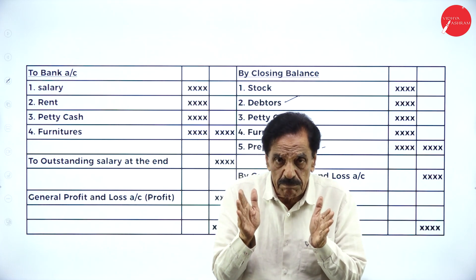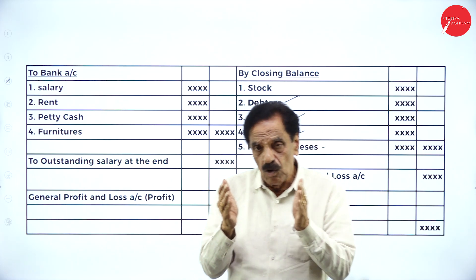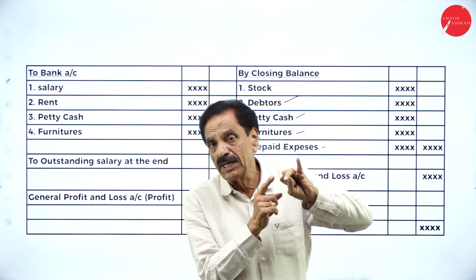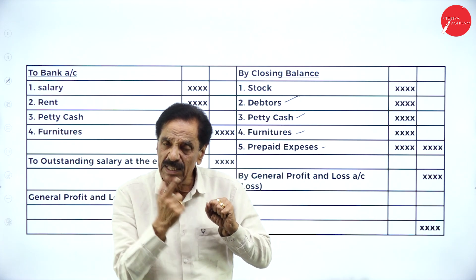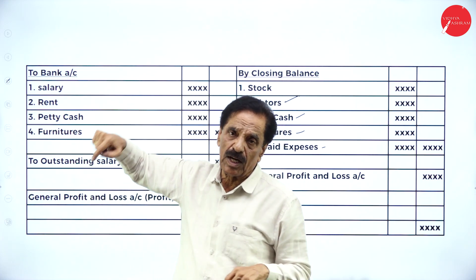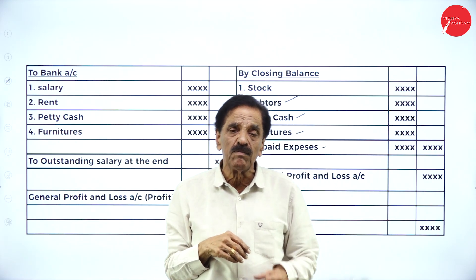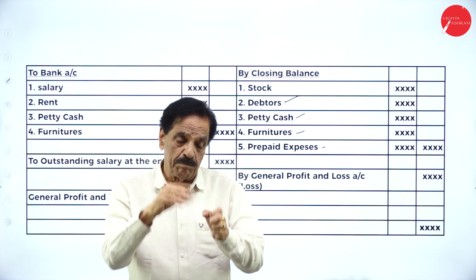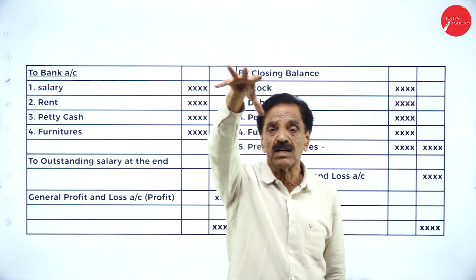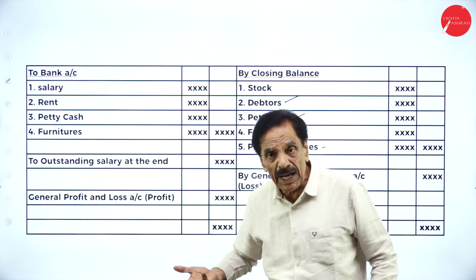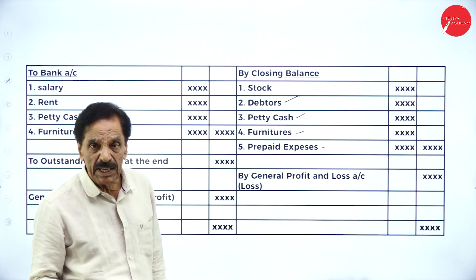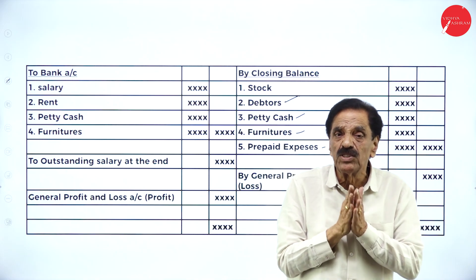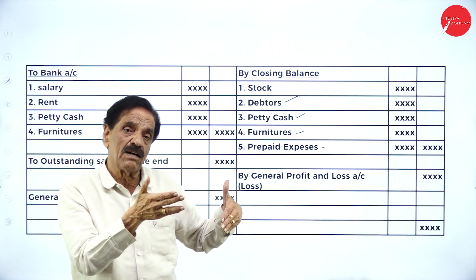So how does it start? Opening balance: opening stock, opening debtor, opening furniture, opening petty cash, opening prepaid expense — all these items should come on the closing side too. If these items are not available, you have to prepare separate accounts. Then goods sent to branch. On the credit side: outstanding balance at the beginning, by bank account, cash sale, cash received from debtor, and goods returned to head office if goods are not up to standard. All closing balances: stock, debtor, furniture, petty cash, and prepaid expenses.